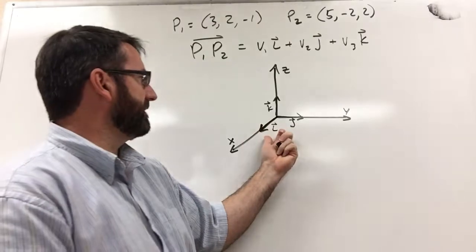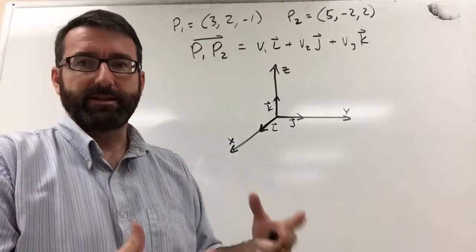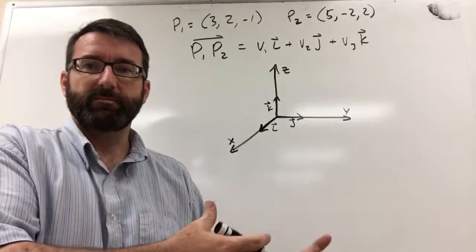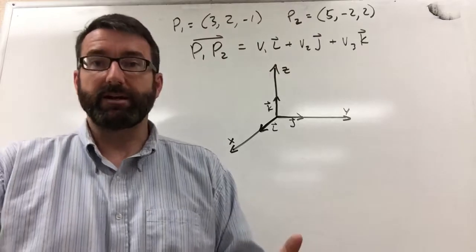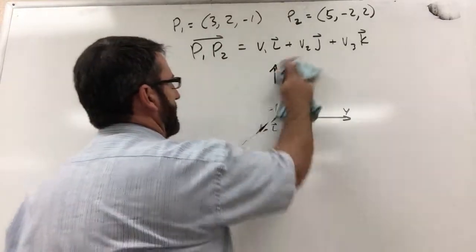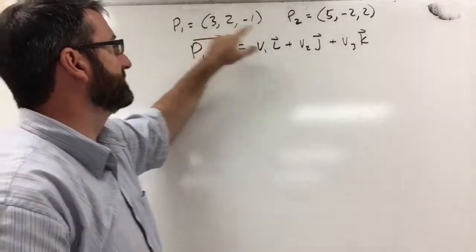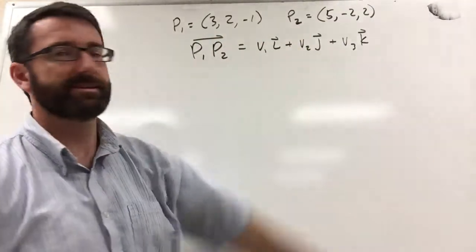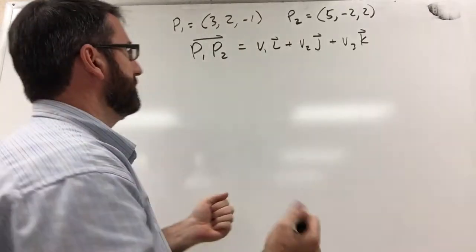And the nice thing about i, j, and k is that by combining them, by multiplying them by a scalar, and then adding them together, we can come up with any vector that we want. So we're asked now to express this vector from this point to this point in this form as a linear combination of unit vectors.